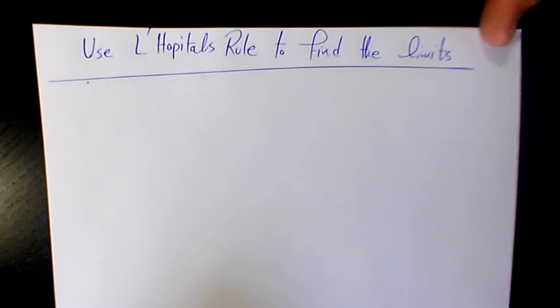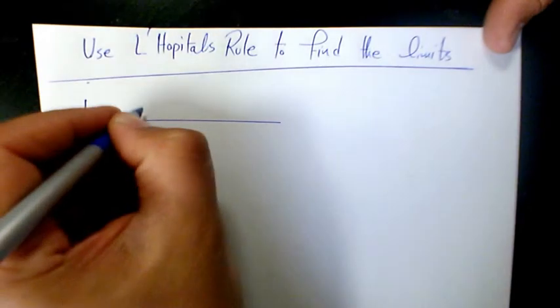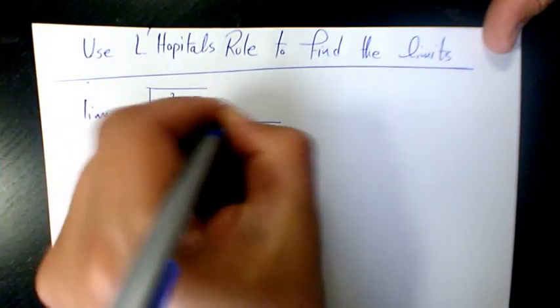What's up guys, this is Massey. Welcome to another video. In this video I want to show you how to use L'Hôpital's rule to find limits. First example is limit of square root of x squared plus five minus three